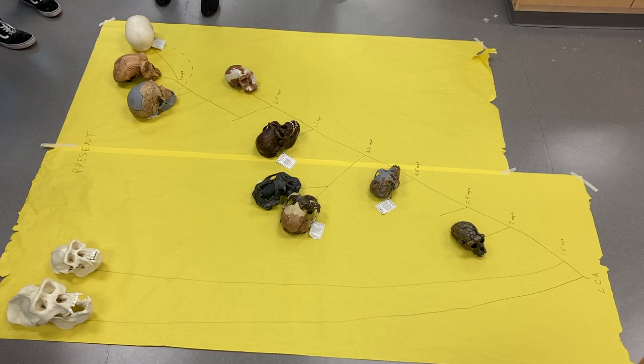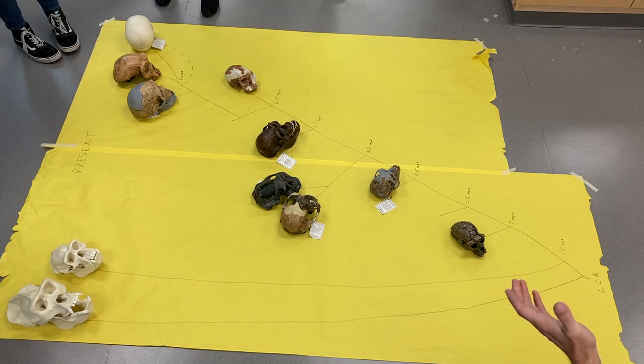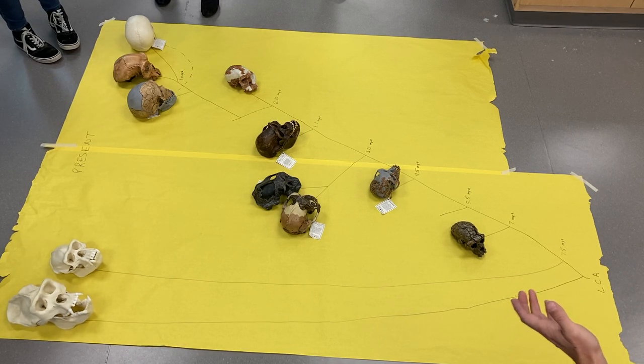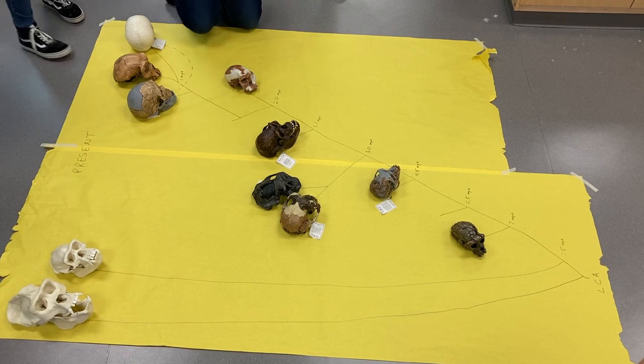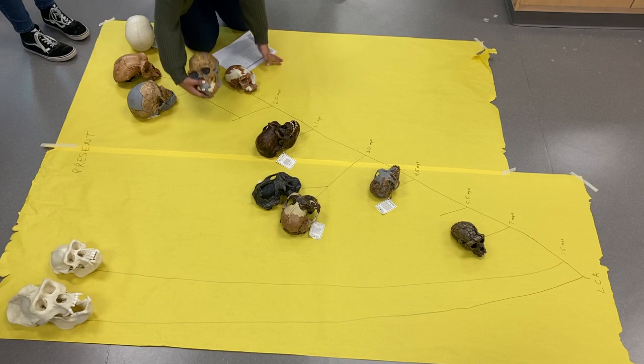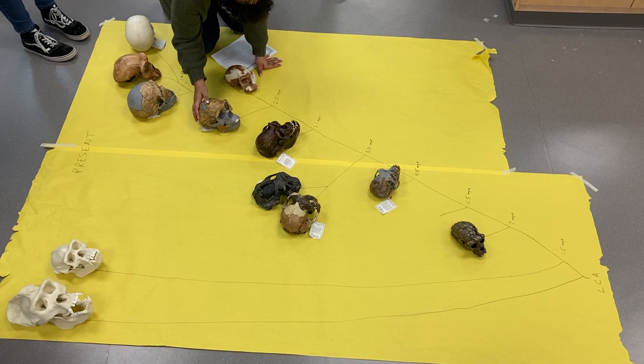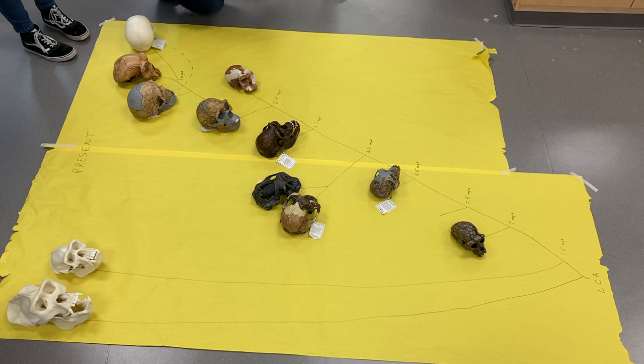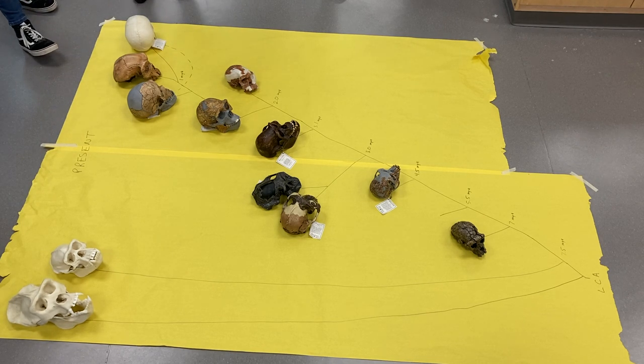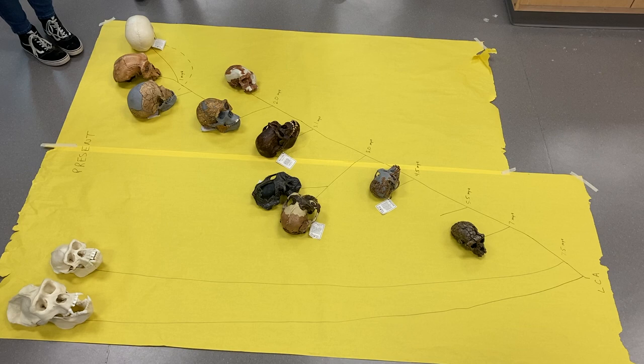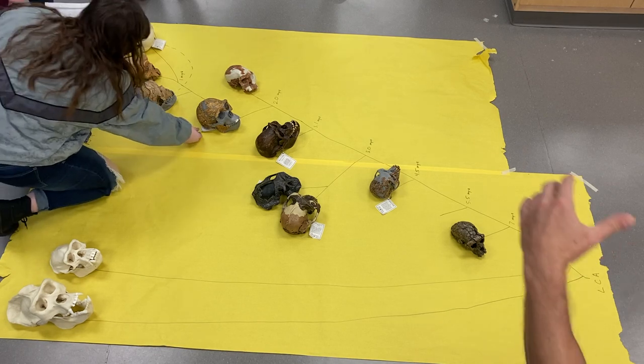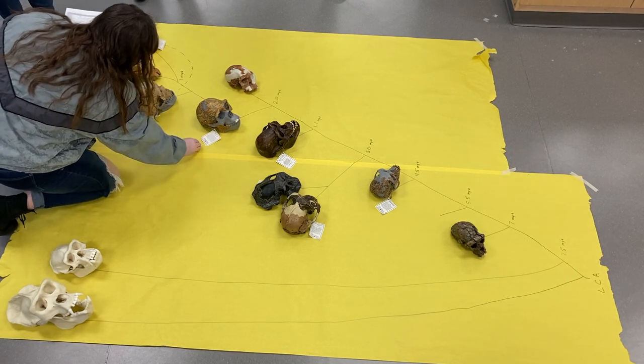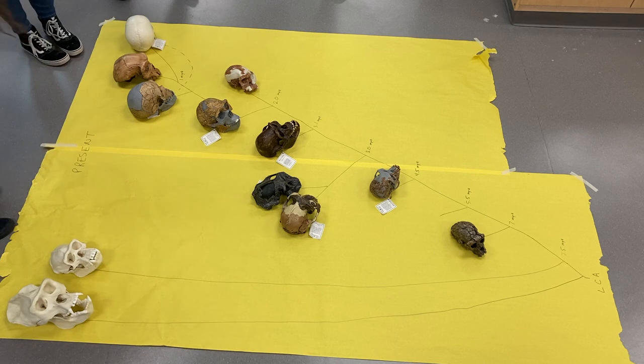Yeah, we know for a fact that Neanderthals interbred with modern humans. And if you have any traces essentially of European DNA, you have some Neanderthal in you. Who would not have Neanderthals? A purebred African person. Interesting, huh? So that tells you something about where the breeding took place. Didn't happen in Africa. Because the Neanderthals had already moved out. They were already north.